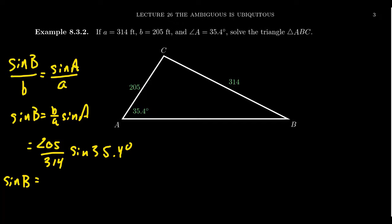Follow along with your own calculator. Make sure you are in degree mode. 205 divided by 314, times that by sine of 35.4 degrees. You'll get approximately 0.3782.